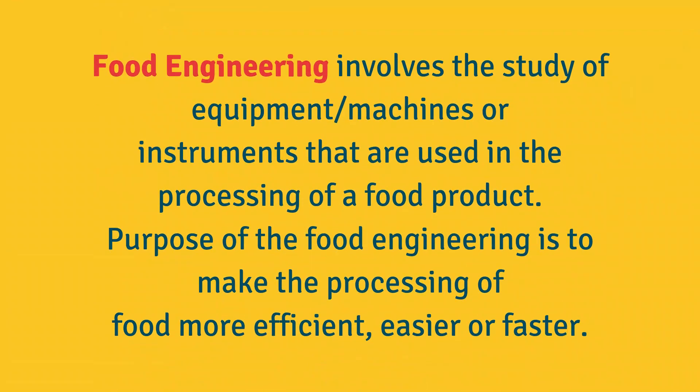These machineries, equipments, and instruments are used to make the process of food processing easier, faster, or more efficient. To convert this apple into apple jam, I need knowledge of the machineries and equipment used in processing. The study of all the machineries, equipments, and instruments used in the processing of a food product — so that conversion of a raw material into a finished product is easier, faster, or more efficient — is known as food engineering.